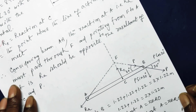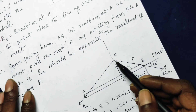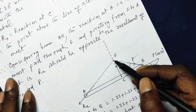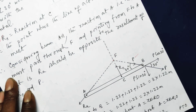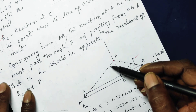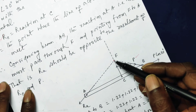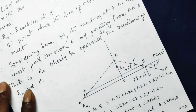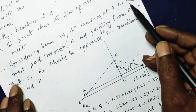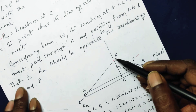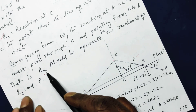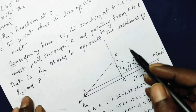Now let us consider beam AB, which I have redrawn here. The applied force P is 890 Newton at point B. The reaction force RC acts at C, and they meet at point F. The reaction at A, RA, must also pass through the same point F and should be directed from F to A. This is because RA should be opposite to the resultant of RC and P to maintain equilibrium.